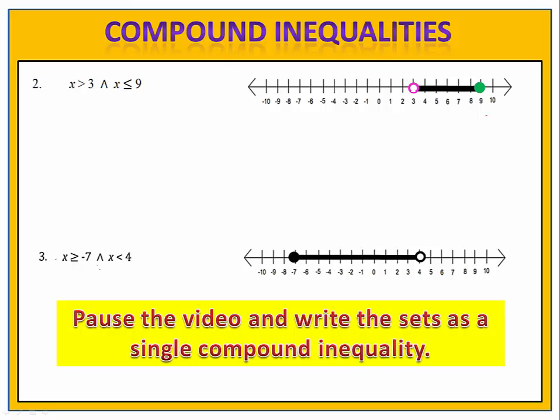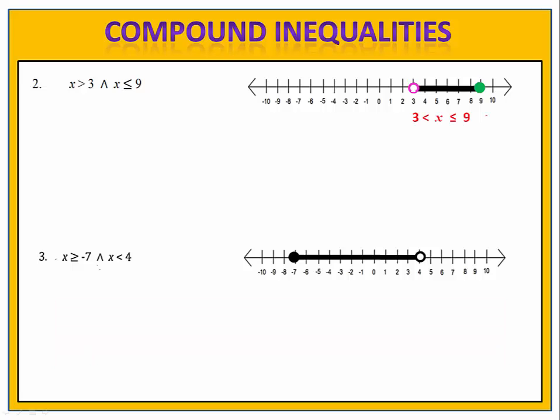Can you write this notation? Take a look at exercises two and three and see if you can write them using a single compound inequality. Please pause the video here. In exercise two, we identify our end points as three and nine, with x in between. We use a less than symbol for the first inequality because we have an open circle at three, and less than or equal to for the second because we have a closed circle at nine. In exercise three, our end points are negative seven and four. We use less than or equal to next to negative seven because of the closed circle there, and less than at four because of the open circle.